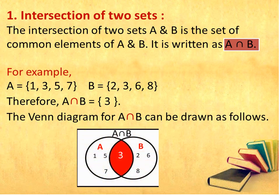The Venn diagram for A intersection B can be drawn as follows. Here, set A is shown in one circle with elements 1, 5, 7, and set B is shown in another circle with elements 2, 6, 8. Both circles are intersecting and the common element has been shown in a shaded region in between.